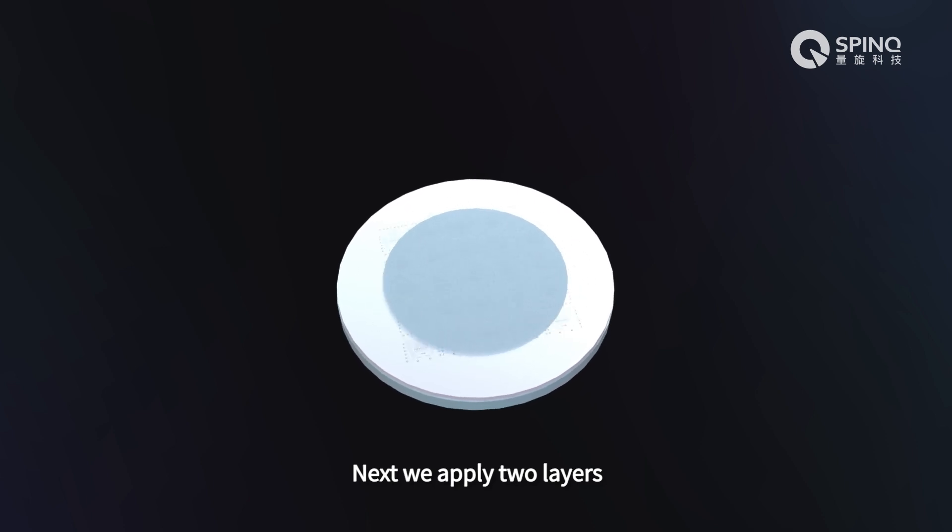Next we apply two layers of electron beam resist to fabricate a Josephson junction circuit.